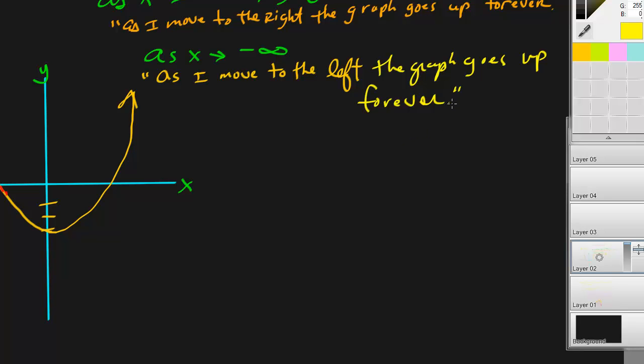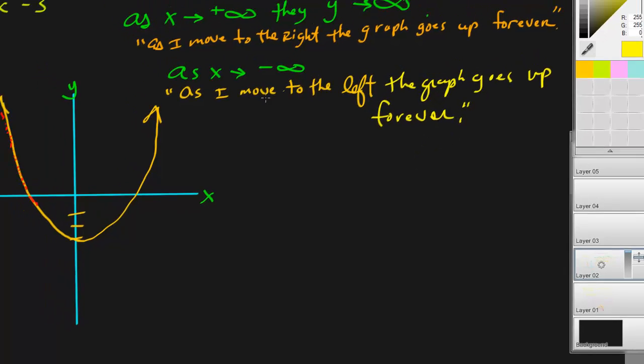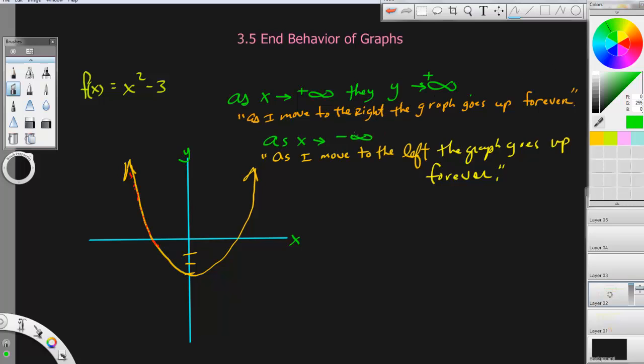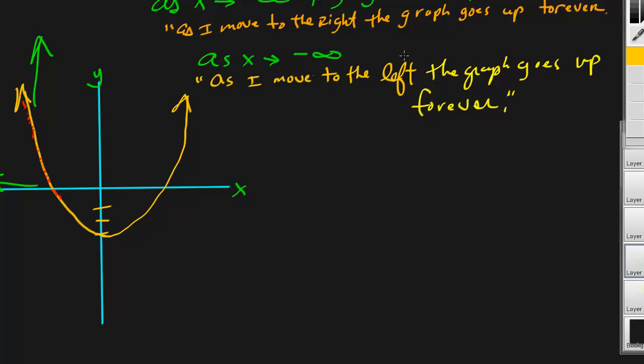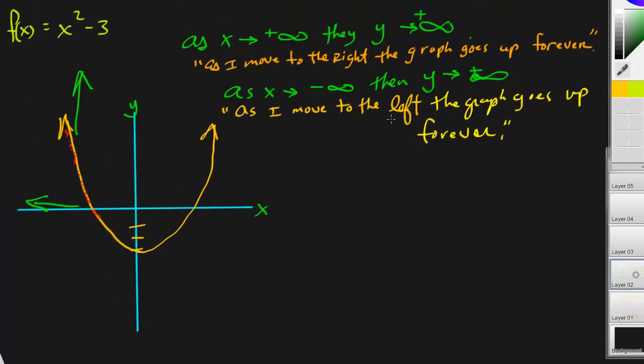All right, this is just common sense way of saying it. But it's so important to understand this green stuff. As I go to the left, so as x approaches negative infinity, so if I go this way, this graph is going up forever. So I would say, then y approaches positive infinity. The green stuff equals the yellow text. As I move to the left, the graph goes up forever.